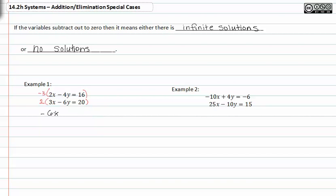Negative six x plus twelve y equals negative forty eight. And in the second one, we would get six x minus twelve y is equal to forty.